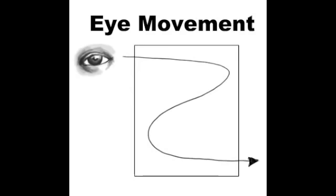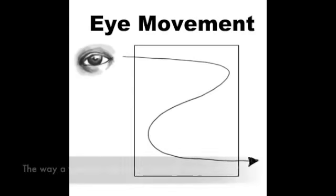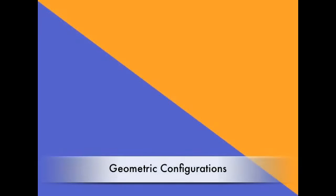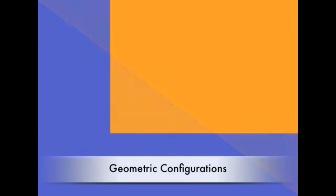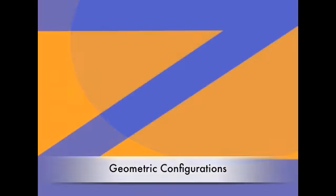You want to make sure when you create a piece of artwork that your viewer sees everything on the surface that you want them to, so you can control the way a viewer's eye moves through the piece of artwork. It's proven that geometric configurations are more aesthetically pleasing to viewers, so it would make sense to create eye movement through geometric configurations.